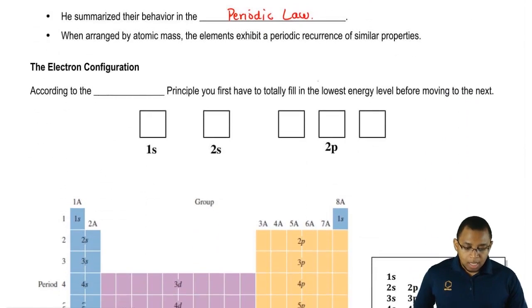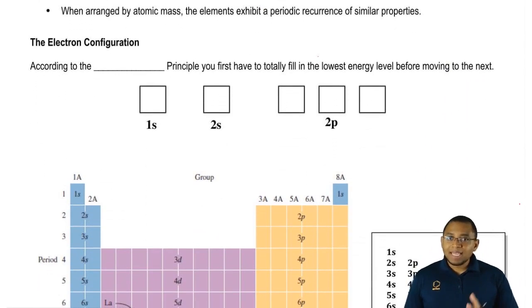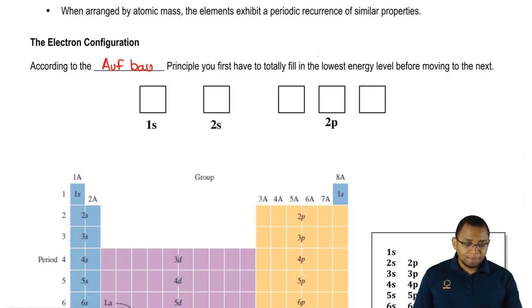Now, when talking about the electron configuration of an element, according to the Aufbau principle, you first have to totally fill in the lowest energy level before moving to the next.